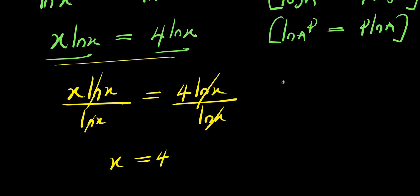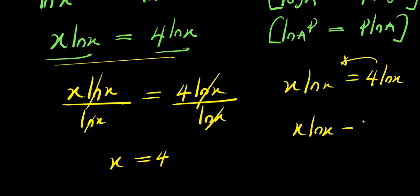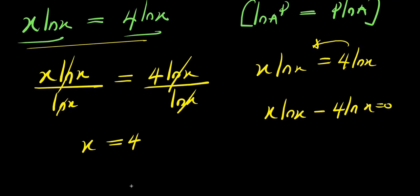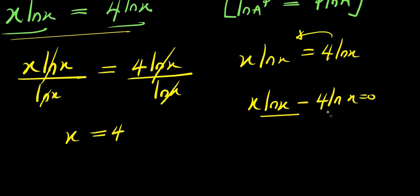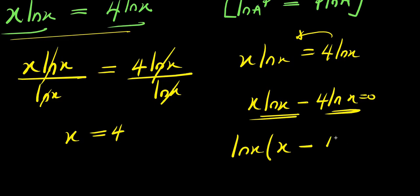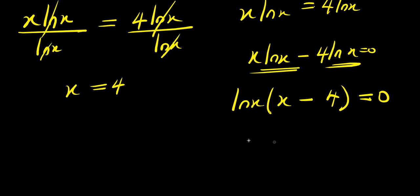Alternatively, starting from x times ln x equals 4 times ln x, move the right side over: x ln x minus 4 ln x equals 0. We can factor out ln x, giving ln x times (x minus 4) equals 0.